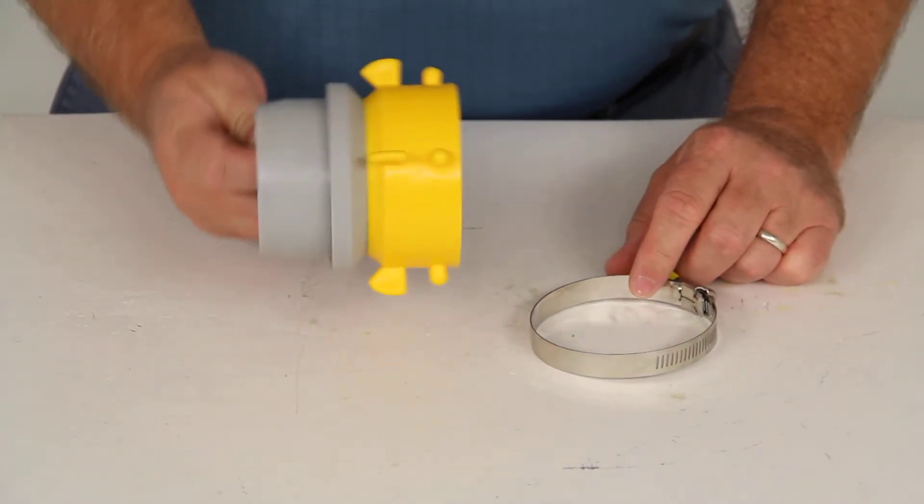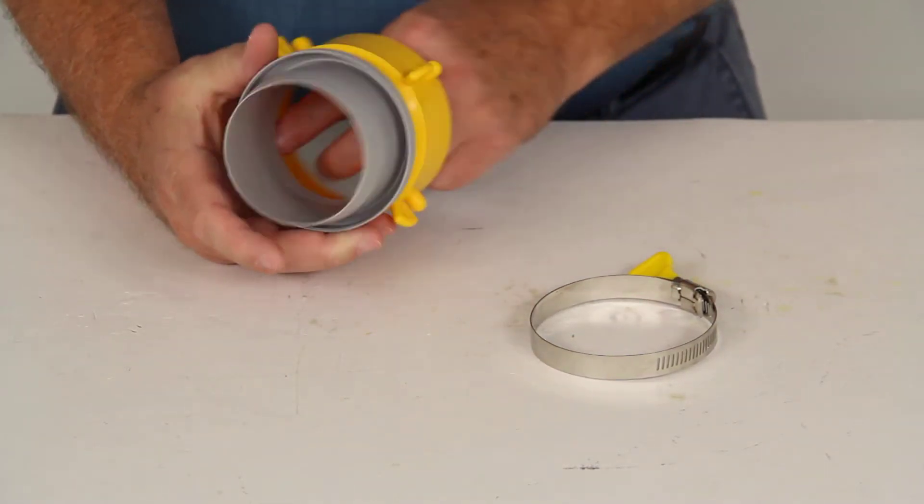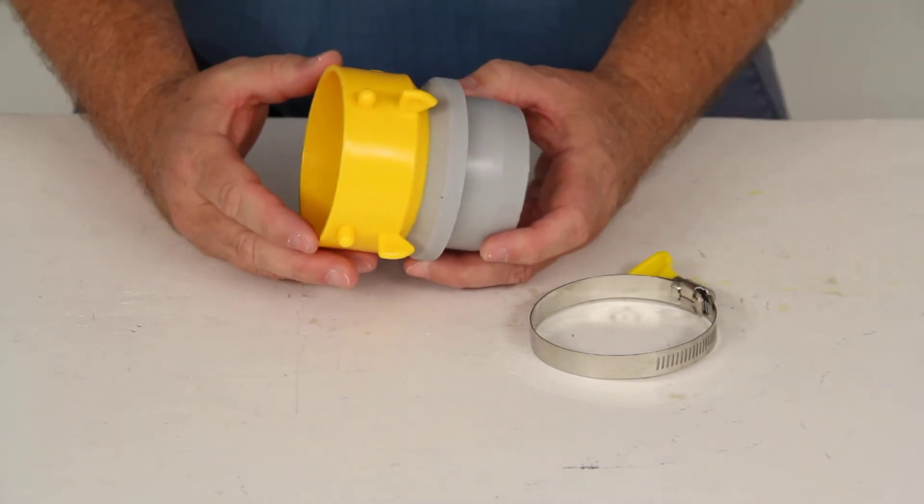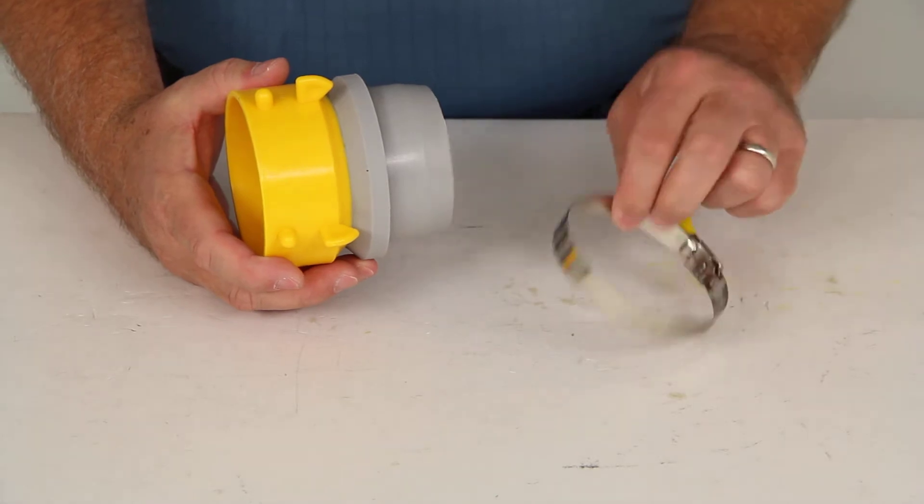Today we're going to review part number CAM39491. This is the Camco Revolution RV Sewer Hose Swivel Lug Fitting with the twisted clamp.